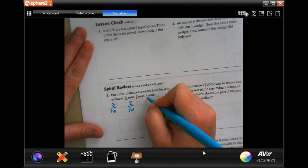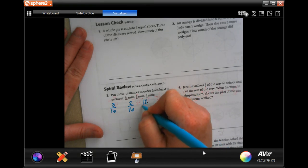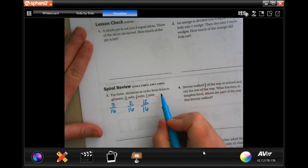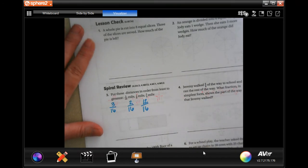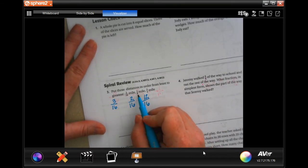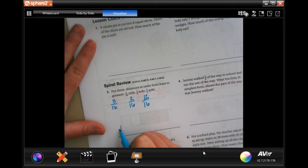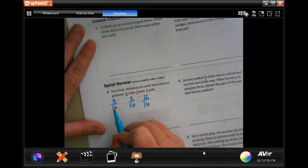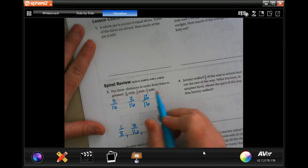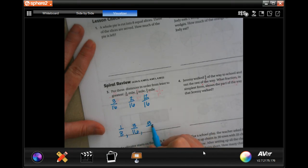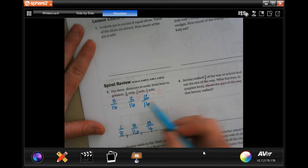And three quarters, well we have to times that 4 by 4 to get to 16, so 4 times 4, so 3 times 4 is 12 sixteenths. Now from smallest to greatest, least to greatest, that's going to be the one eighth, the three sixteenths, and the three quarters.